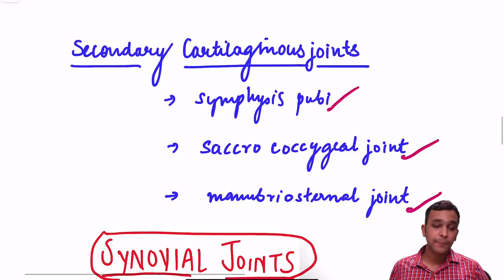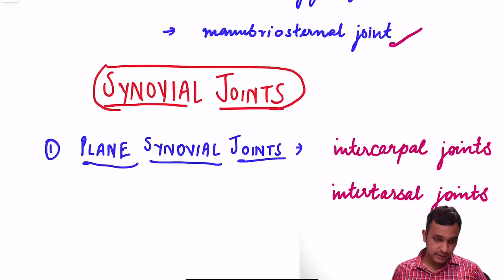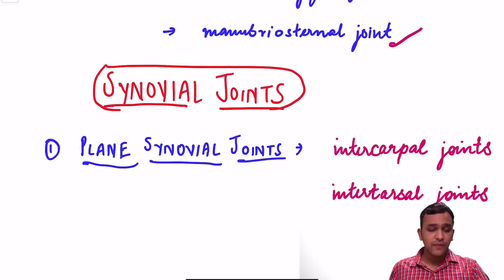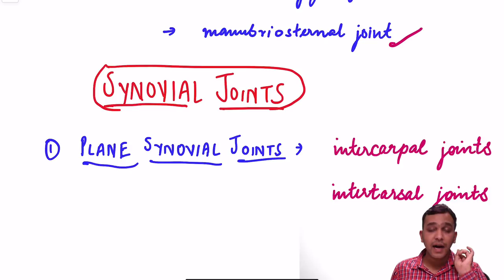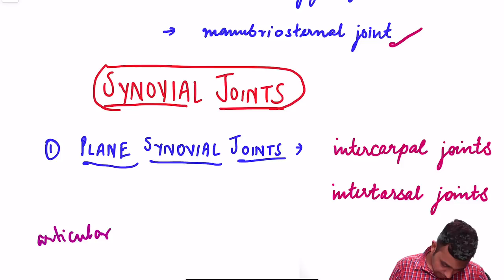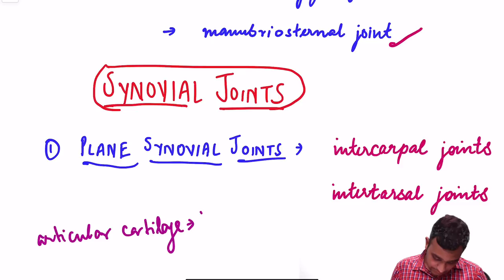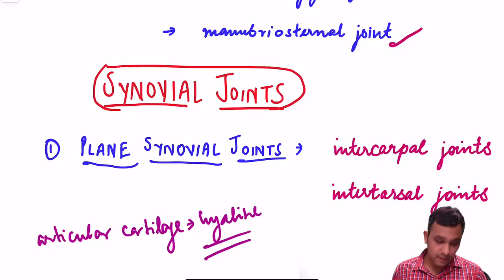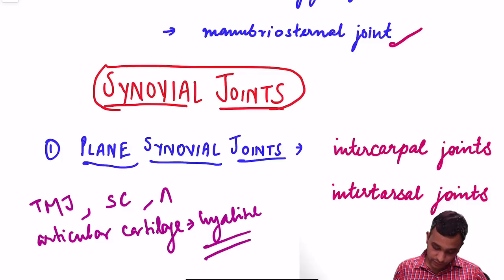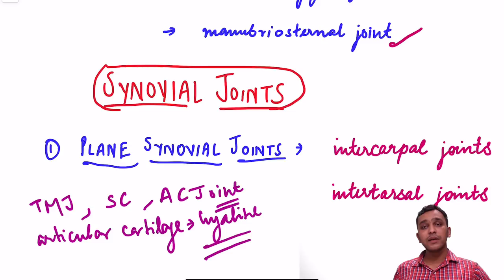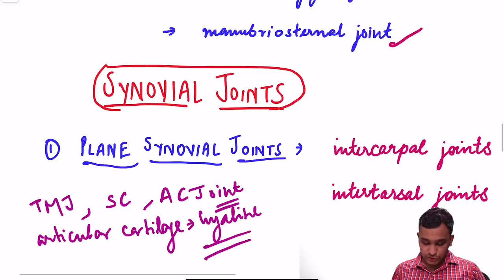Synovial joints possess a cavity and the articular surface is surrounded by a fibrous capsule. The articular surface is covered by articular cartilage made up of hyaline cartilage, with exceptions. The joints where articular cartilage is not made of hyaline cartilage but is instead made of fibrocartilage are: the temporomandibular joint, the sternoclavicular joint, and the acromioclavicular joint.